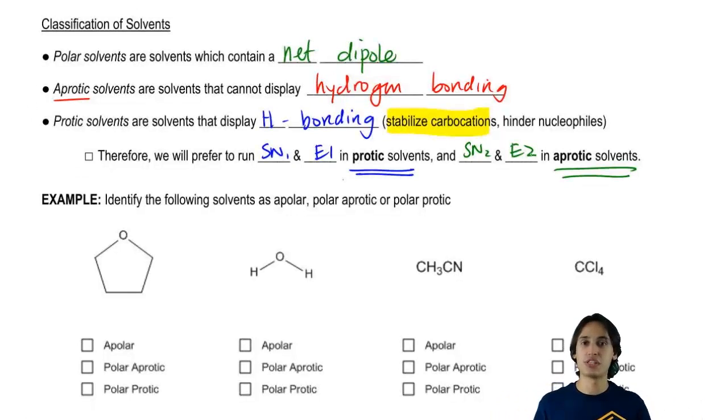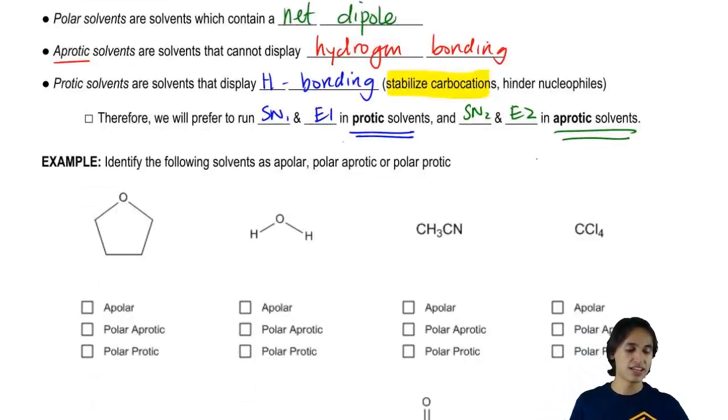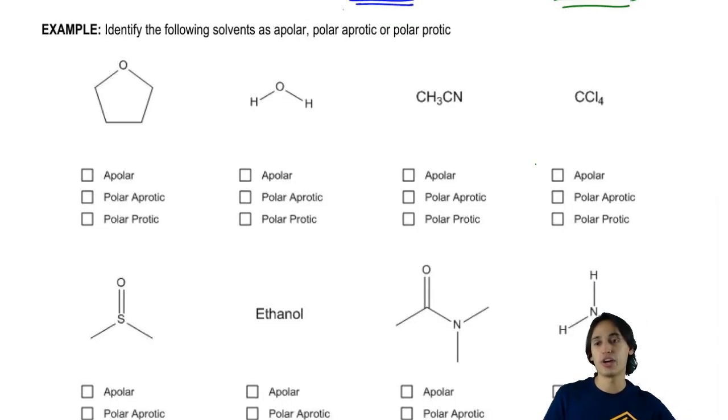So now what I want to do for the rest of this page is just go through these eight solvents. This will kind of be a combination of identifying solvents and also just a teaching moment for you guys to learn a few common solvents that we use in all of organic chemistry. Not just one, we're going to use these solvents for orgo one and for orgo two.